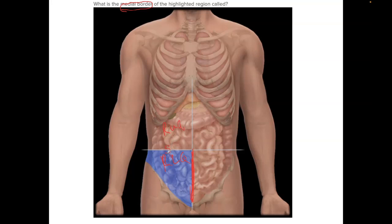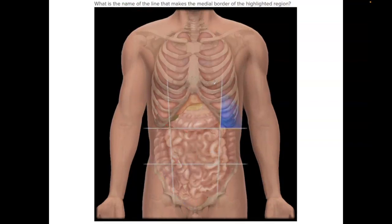Superior border is here. Inferior or lateral border is here. So don't jump to conclusions. Okay. Well, this is umbilical, this is epigastric, this is pubic, this is flanks, and this is the left hypochondriac region. But that's not what it's asking. What is the name of the line that makes the medial border?